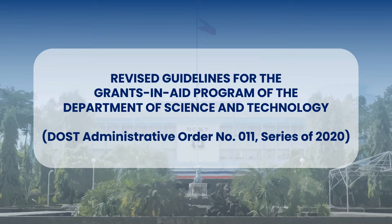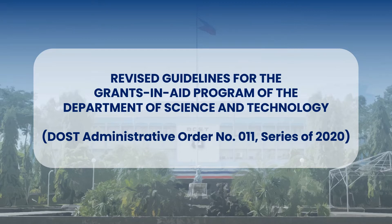The revised DOST-GIA Guidelines was signed by the Secretary on September 2, 2020 and was issued as an administrative order, taking effect on September 29, 2020. The DOST-GIA Executive Committee is the highest policy and approving body of DOST with authority to make decisions and ensures that these are carried out in the implementation of DOST-GIA-funded programs and projects.